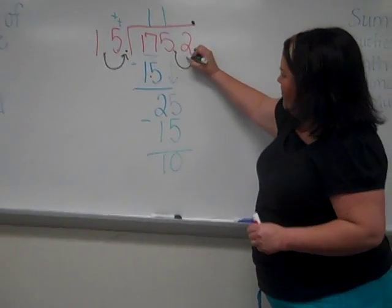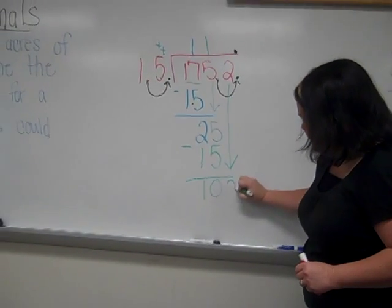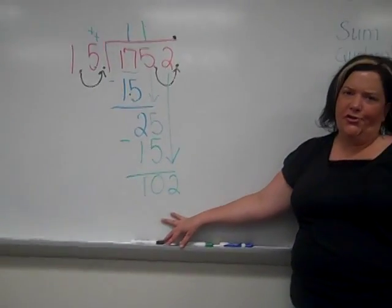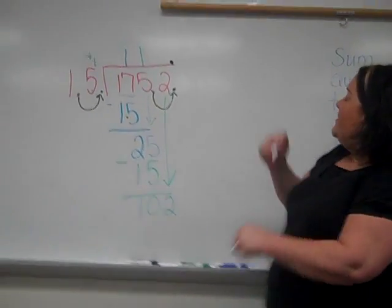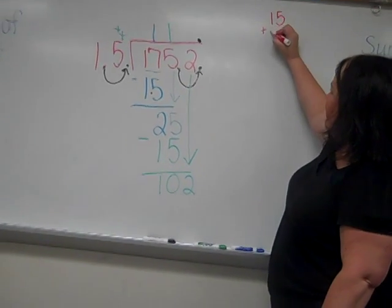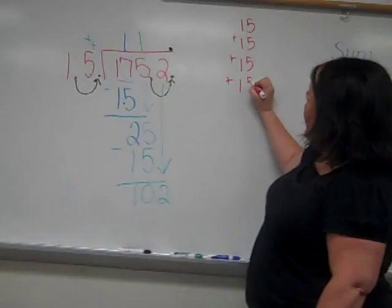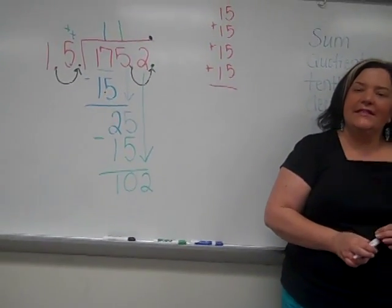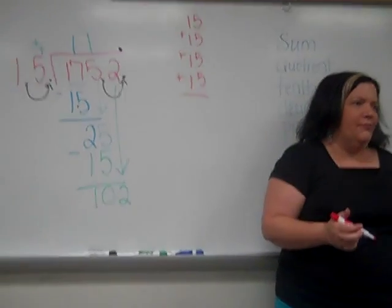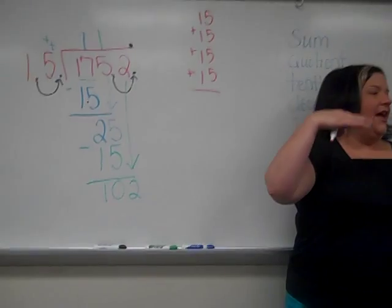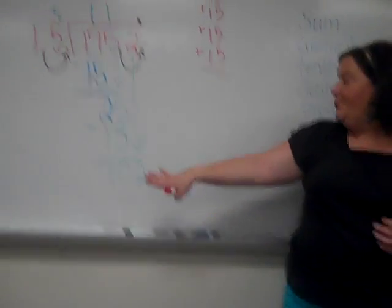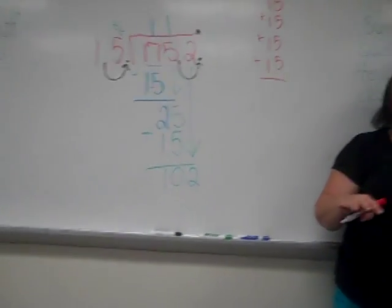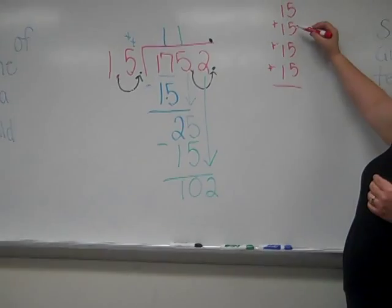And then 1 times 15 is 15. So we subtract and 15 from 25 would be 10. We're going to bring down the 2. And we have to think to ourselves, how many times can 15 go into 102? Well, I'm not sure. So I'm going to speed add 15 down the side of my paper to figure out how many times 15 could go into 102. Children, speed adding is just another word for multiplication. You could keep multiplying 15 by a number until you get close to 102 without going over. Or, if you're a little rusty on your multiplication, you can speed add.